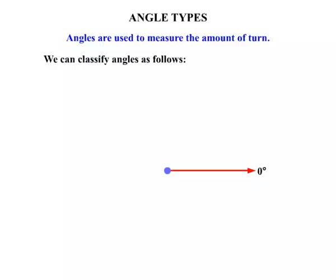When we do that we can classify angles as follows. If we start the turn we can see there we've formed an angle, and this is an example of an acute angle. Acute angles are between zero degrees and 90 degrees. So we keep turning that red line. All of these are examples of acute angles.